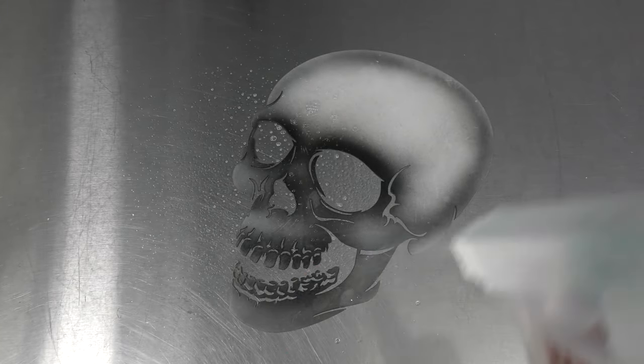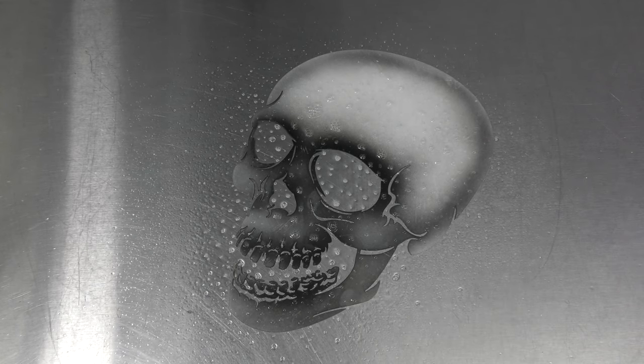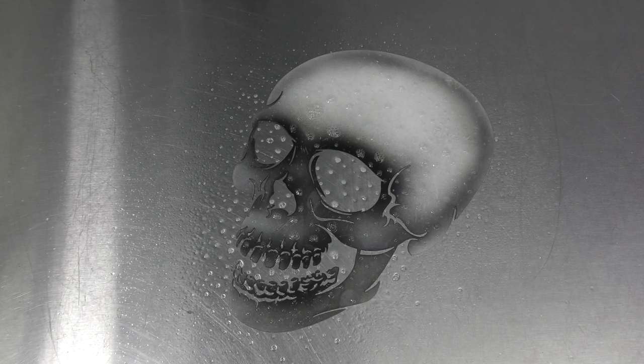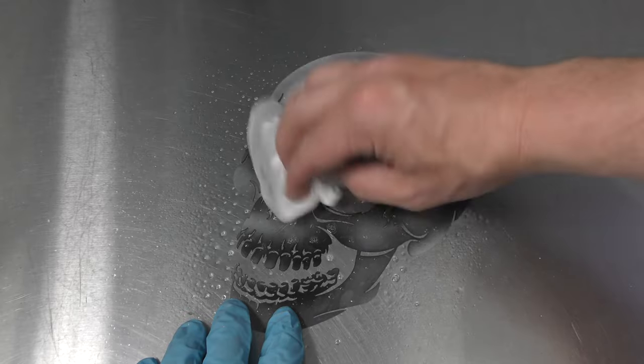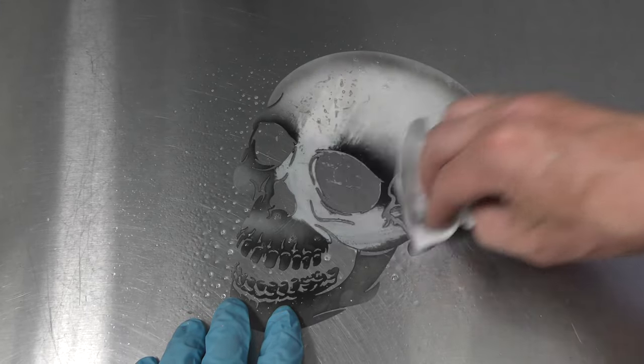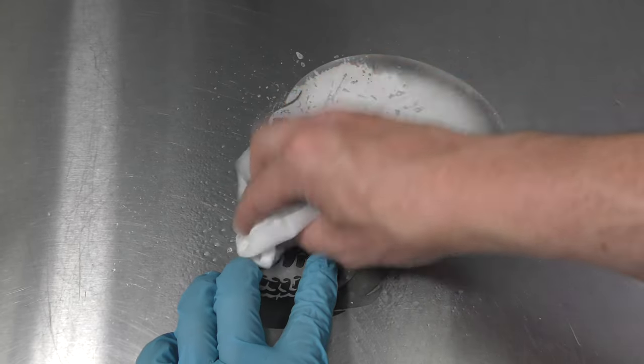Make sure you also wear some protective gear when spraying this, especially a mask because it is still toxic. Again, spray it on, let it sit for a second, then grab another baby wipe. Carefully hold onto your template and you can see how quick and easy that strips the paint off. So it doesn't matter even if that paint has cross-linked, this will strip it off.